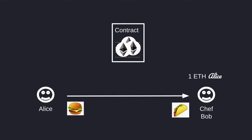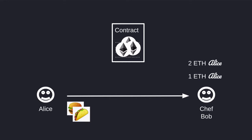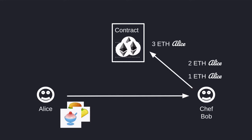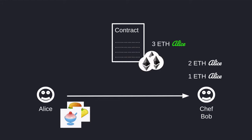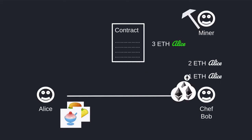Next, Alice wants to order a taco, so she signs a message saying that Bob can spend two Ether from the smart contract, sends the signature to Bob, and Alice gets the taco. Likewise for the dessert — Alice gets the dessert, and Bob gets the signature saying he can spend three Ethers. All of this is done off-chain, so there are no transaction fees involved. Now to finalize the payment, Bob will submit a message signed by Alice saying he can spend three Ethers. The smart contract checks that it was indeed signed by Alice and unlocks the three Ethers, sending them to Bob. In this whole process there was only one transaction, so there's only one transaction fee to pay to the miner.